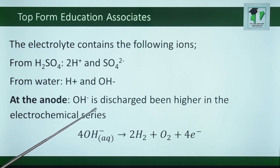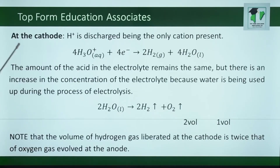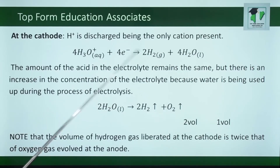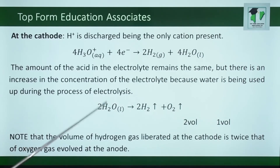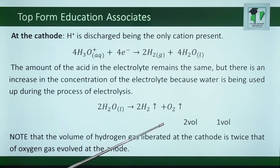At the anode, hydroxyl ion is discharged, being higher in the electrochemical series, to give oxygen gas and water. While at the cathode, hydrogen ion is discharged, being the only cation present, to give hydrogen gas. The amount of acid in the electrolyte remains the same, but there is an increase in the concentration of the electrolyte because water is being used up during electrolysis. Note that the volume of hydrogen gas liberated at the cathode is twice that of the oxygen gas evolved at the anode.